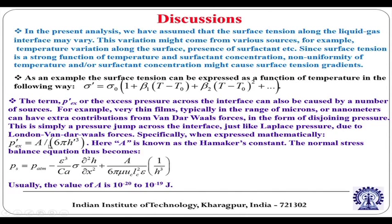One typical way of representing the disjoining pressure mathematically is as a parameter A divided by h_prime cubed times 6 pi, where A is known as the Hamaker constant. It is possible to obtain the Hamaker constant for various material interactions by considering intermolecular forces. In dimensionless form the normal stress balance including this excess pressure term looks accordingly. In many problems in microfluidics and nanofluidics this excess pressure term is very important.